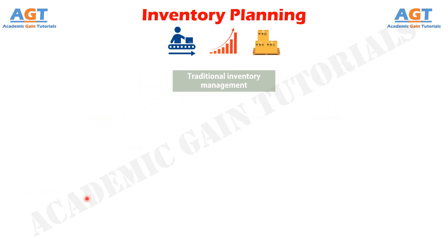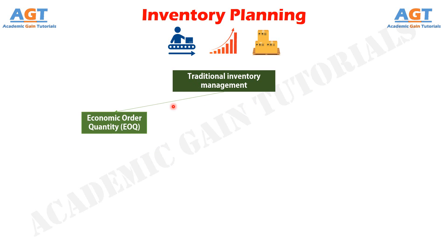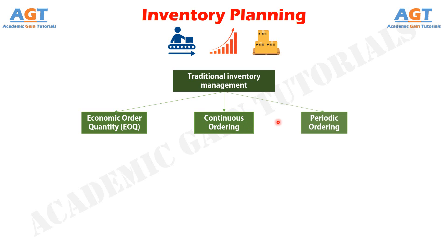The traditional inventory management approach consists of three models: Number 1, the Economic Order Quantity Model, in short the EOQ Model; Number 2, the Continuous Ordering Model; and Number 3, the Periodic Ordering Model.